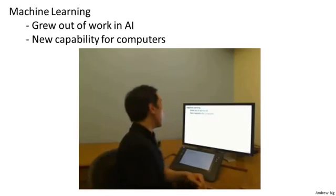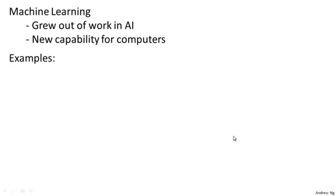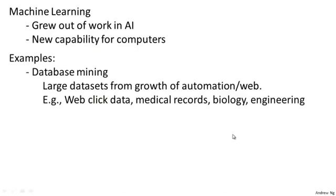Here are some modern examples of machine learning. There's database mining. One of the reasons machine learning is so prevalent is the growth of the web and the growth of automation — all this means that we have much larger data sets than ever before. For example, tons of Silicon Valley companies are today collecting web click data, also called clickstream data, and are trying to use machine learning algorithms to mine this data, to understand the users better and to serve them better. That's a huge segment of Silicon Valley right now.